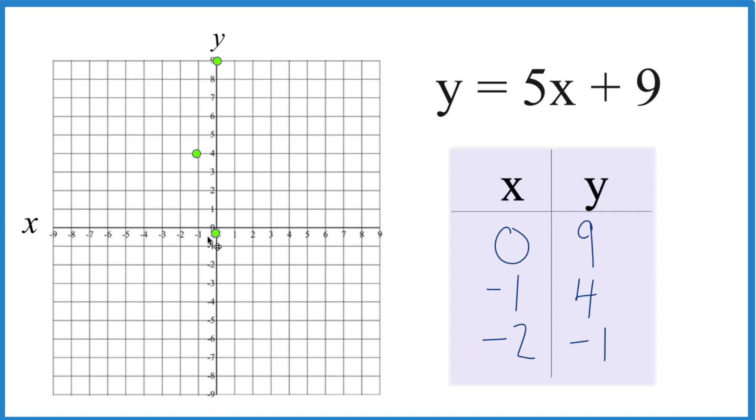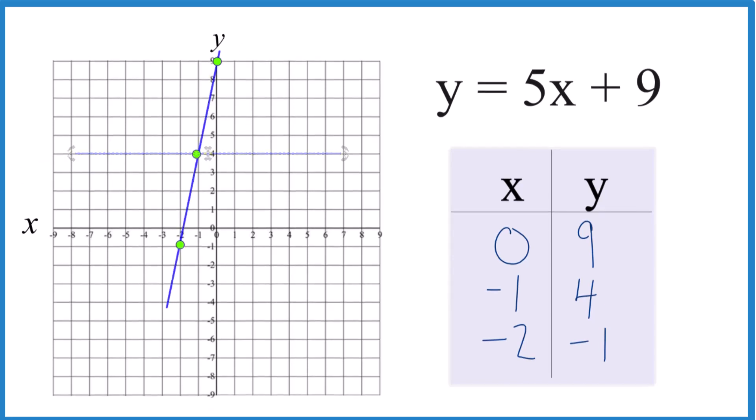So we have negative 2x, and then negative 1y, and you can see they all line up. Let's put a line through that. Then we'll put arrows here to show that it goes to infinity.